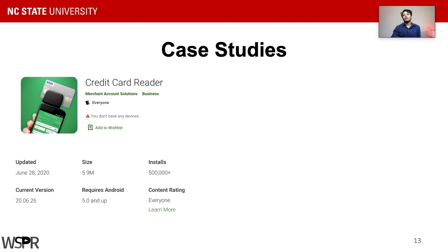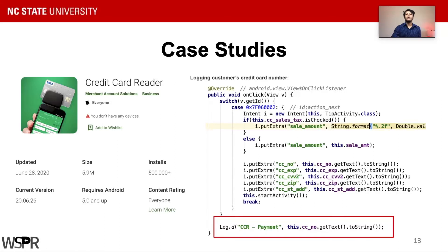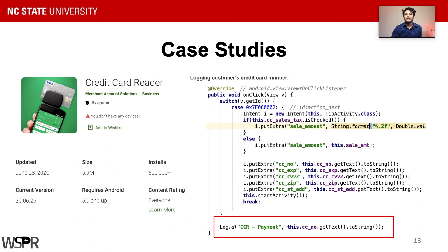Here are some deeper dives into some of the non-compliant apps. First, we have a credit card reader app which insecurely prints credit card numbers in device logs. Device logs are used for debugging purposes and can be easily retrieved if someone has physical access to the device. Interestingly, this is a merchant app — a merchant uses this app to accept payment from customers — and it has more than 500K downloads. If any merchant is using this app to serve, say, 100 customers per day, the app is secretly logging all of their credit card numbers, potentially exposing 50 million credit card numbers daily.